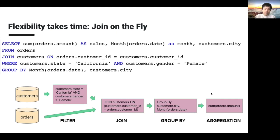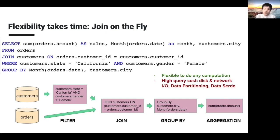Meanwhile, we perform the predicate for customer state equals California and gender equals female. After that, we do a join to shuffle data from both tables based on customer ID. Then we do a group-by phase, which shuffles data based on months of the order date as well as the customer's city. Once the group-by is done, we perform the aggregation — the sum on order amounts — and render the final results. The advantage is full flexibility, but the disadvantage is high query cost: lots of disk and network IO, plus CPU cycles spent on data partitioning and serialization.